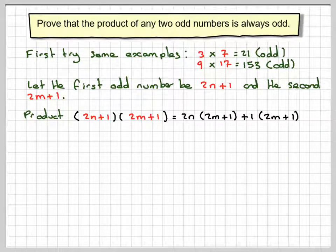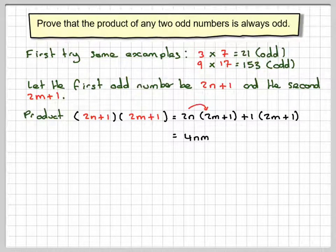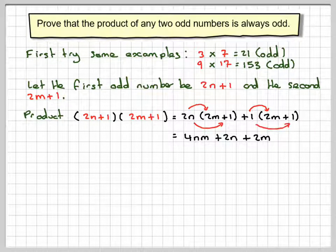So expanding, 2 times 2 gives me 4nm plus 2n plus 2m plus 1.